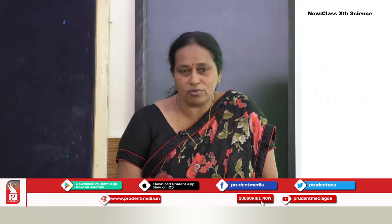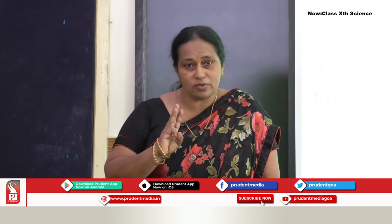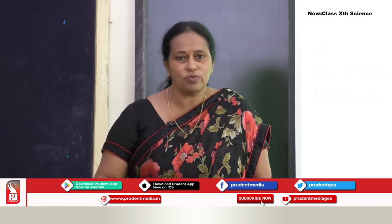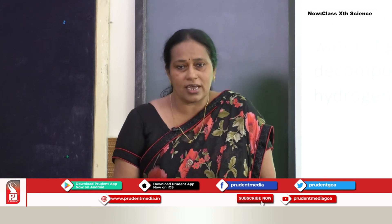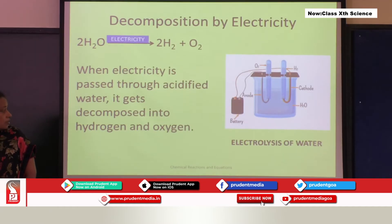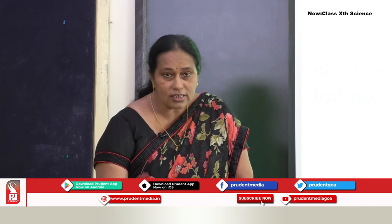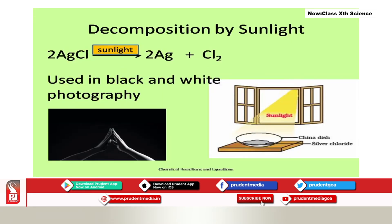The hydrogen and oxygen are collected by the downward displacement of water in test tubes. The volume of hydrogen is twice the volume of oxygen. This kind of reaction is called electrolysis of water, which is an example of decomposition reaction taking place with the help of electricity.